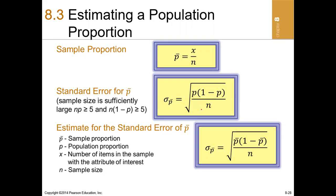In a situation where we don't have the population proportion, computing the standard error becomes difficult. However, once we have a large sample size where np is greater than or equal to five, the sample proportion can be the best estimate of the population proportion. So when we don't have the population proportion, we can still compute the standard error using the sample proportion.